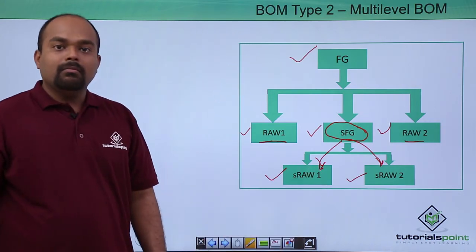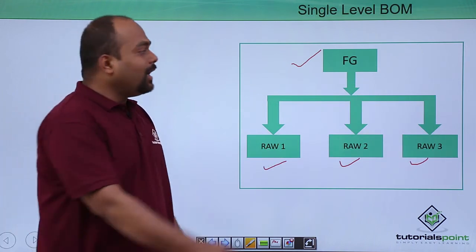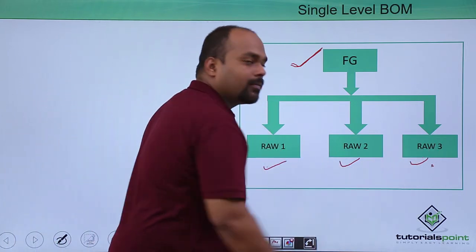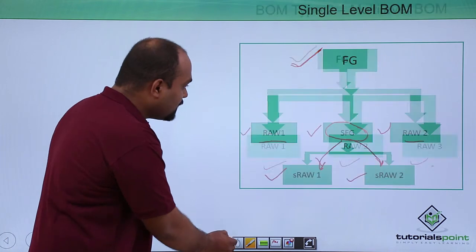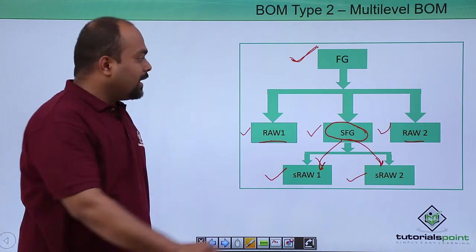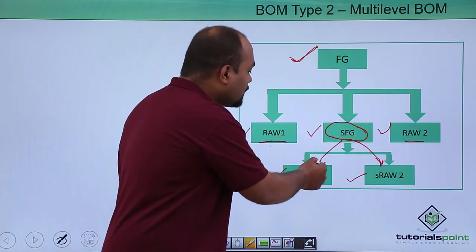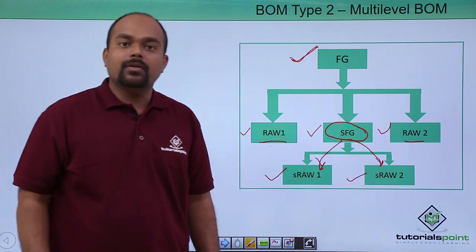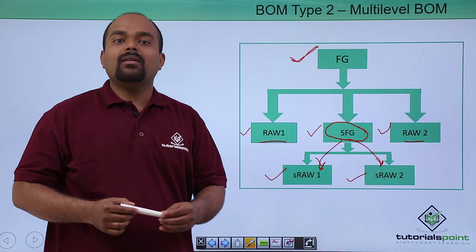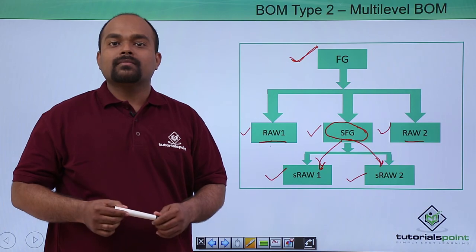That is nothing but a multilevel BOM. As we saw in the first slide, there is only one finished good and under it three raw materials. But in the multilevel BOM, there is one finished good with raw materials, and under one of those there is another level of raw materials for the semi-finished good. So the two BOM types are: the single level BOM and the multilevel BOM. In this video, we have seen the BOM types. Thanks a lot.